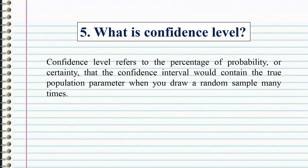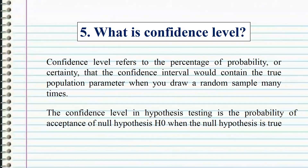Confidence level refers to the percentage of probability, or certainty, that the confidence interval would contain the true population parameter when you draw a random sample many times. In hypothesis testing, the confidence level is the probability of acceptance of the null hypothesis H0 when the null hypothesis is true.